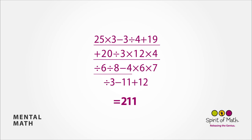Subtract 4 is 15, and multiply that by 6 is 90. Multiply it by 7 is 630. Divide that by 3 is 210. Minus 11 and add 12 is the same as saying add 1. So 210 plus 1 is 211. And that's your final answer.